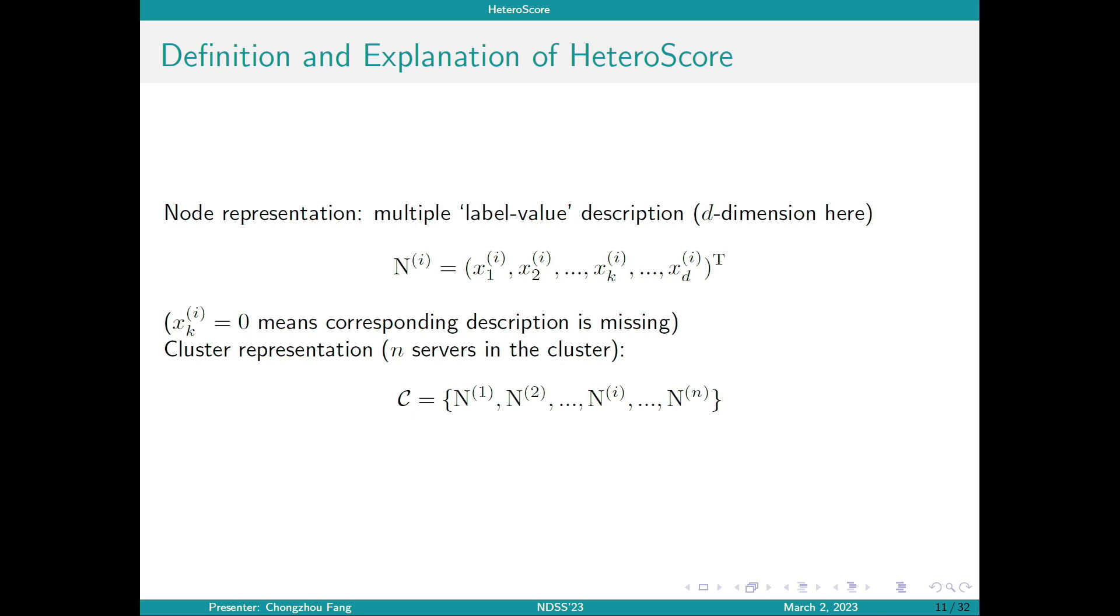Here we assume every server comes with certain metadata in the form of label-value description, which will also be used during scheduling process. For example, a server might come with one description with the label CPU type and with the value Xeon. We'll first convert these values to numbers and map all servers to a d-dimensional space, where d is the number of total labels in the cluster. We use a vector to represent each server in this cluster. If there are zero components in the representation, it means that the corresponding label-value pairs are missing in the metadata.